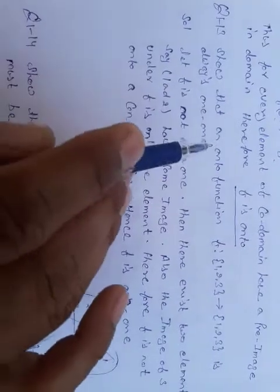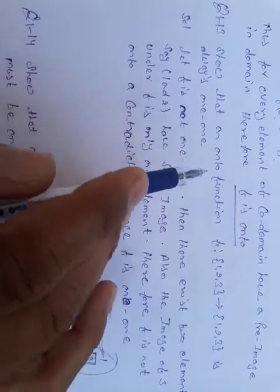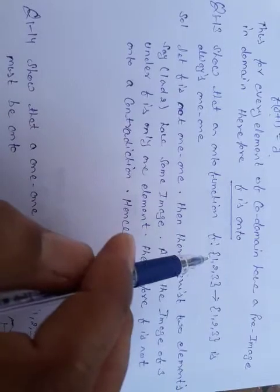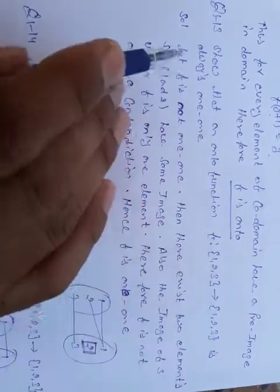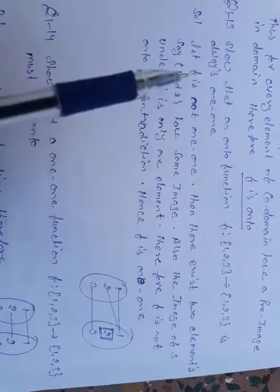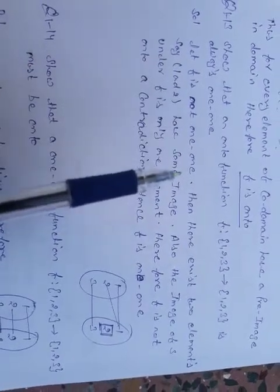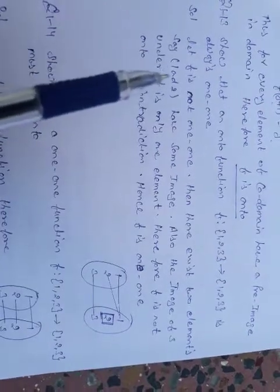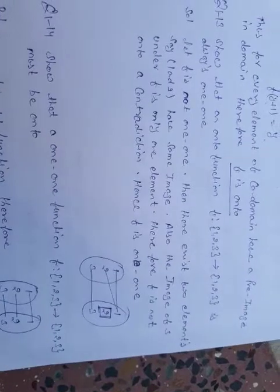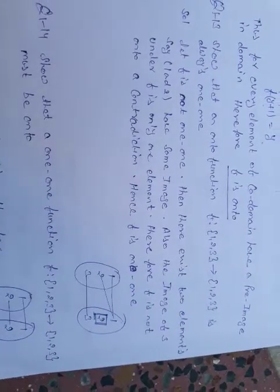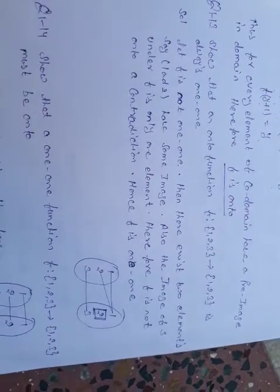Example 13: Show that an onto function f from {1, 2, 3} to {1, 2, 3} is always one-one. We use contradiction — let f not be one-one. Then there exist two different elements, say 1 and 2, that have the same image. At least two members share one image.